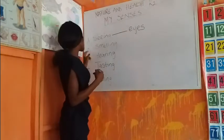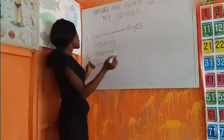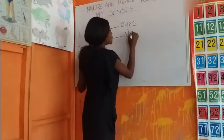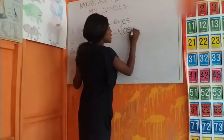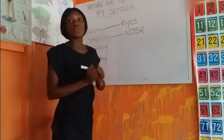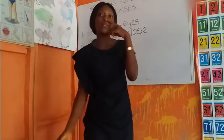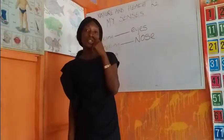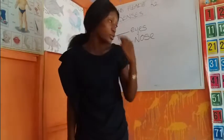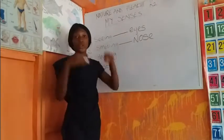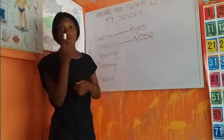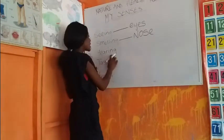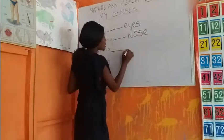The next sense is the sense of smelling, and the organ used for smelling is the nose. This is my nose, and so does everyone — you use your nose to smell. You don't smell with your eyes or your ears; you use your nose for smelling.